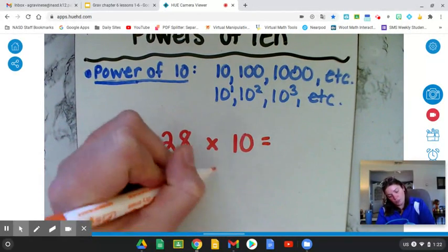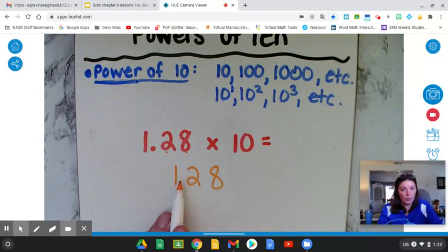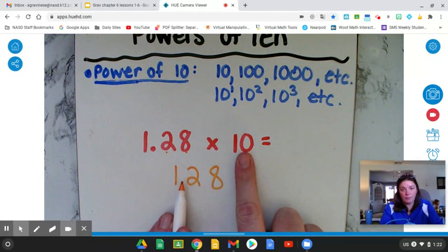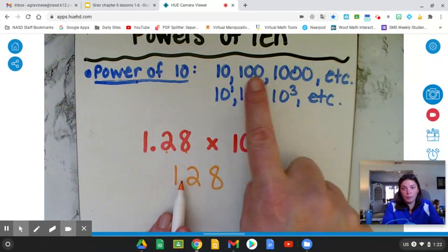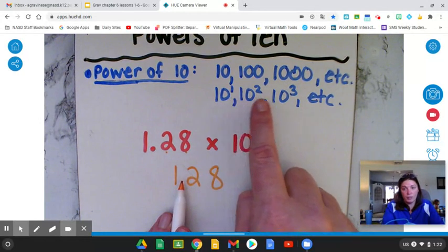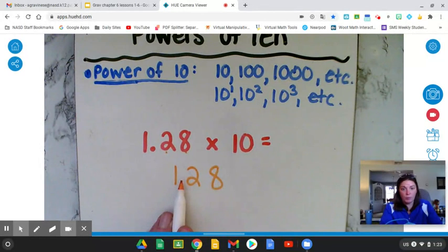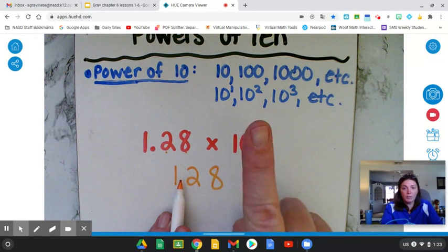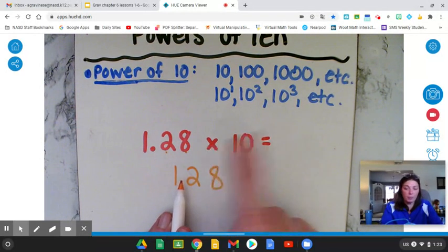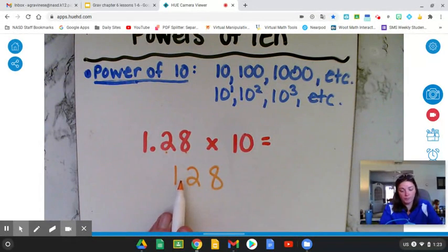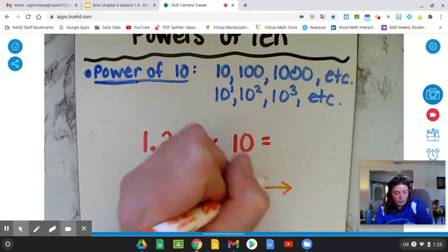So here's how that would work. What I'm going to do first is write out my decimal, and I'm putting my marker where the decimal point was originally. Then I'm going to look at my power of 10, and I'm going to count the number of zeros if it's written in standard form, or I'm going to check out the exponent if it's written in exponential form. Since this one is just written in standard form, I'm going to count the zeros, and I see one zero in my power of 10. That means I need to take my decimal point and move it one unit over, one hop over, one place value position over to the right.